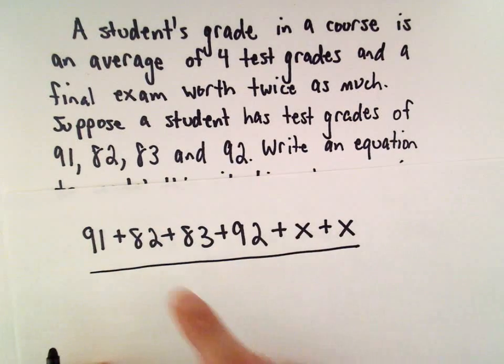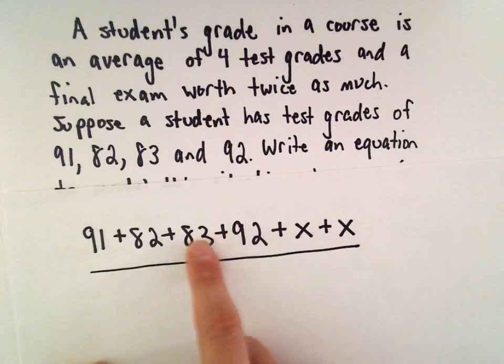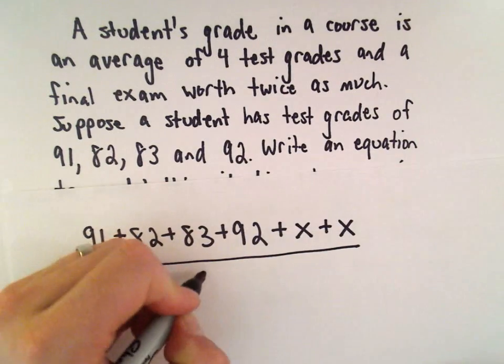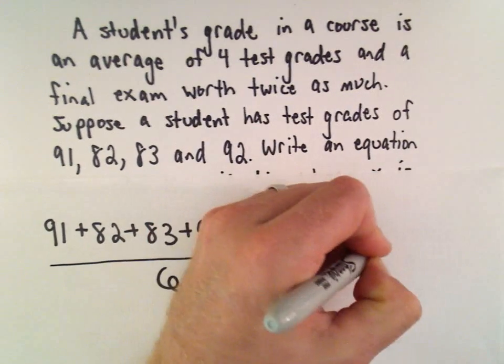To calculate the average, we have to divide by the number of terms in the numerator. There's one, two, three, four, five, six terms in the numerator, so we'll divide by six, and that's going to equal the average Y.